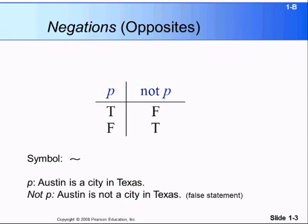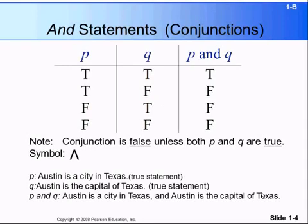For example, 'Austin is a city in Texas.' The negation of that statement will be 'Austin is not a city in Texas,' which is a false statement. Remember, a statement can be either true or false. So for a single statement P, it has two choices: true or false. Negation of a true statement will be false, and if the statement is false, the negation will be true.